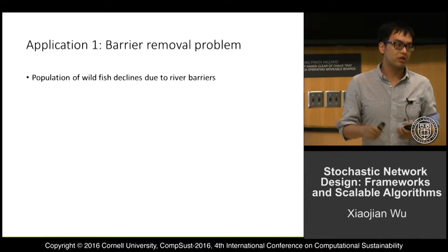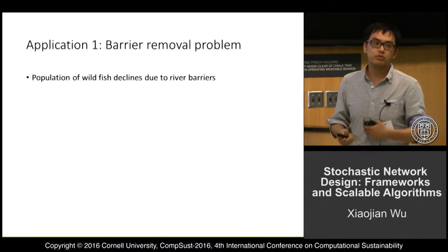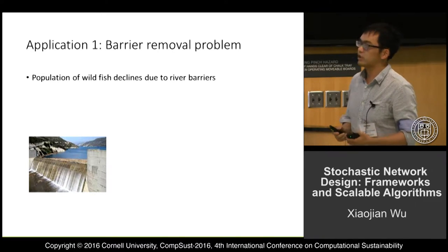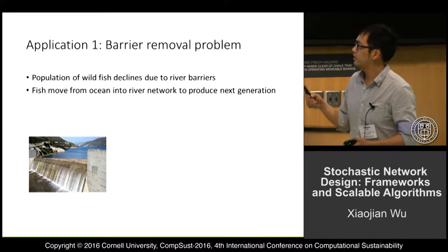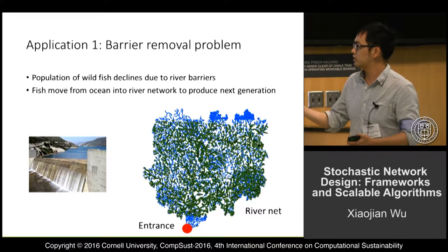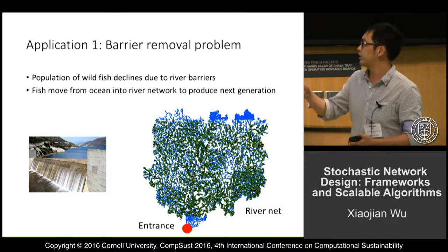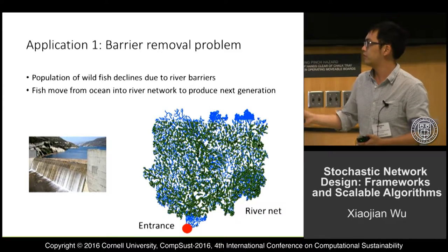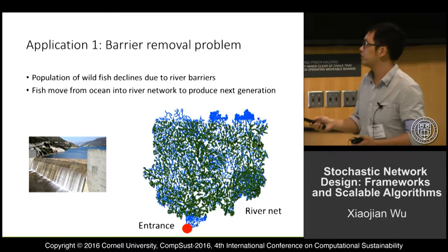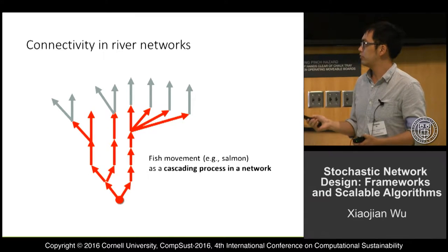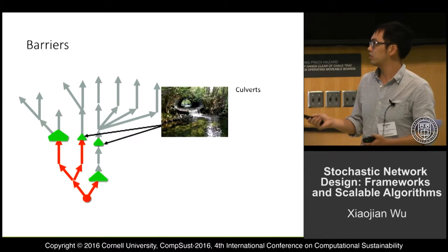Since the previous speaker already talked about this problem, I'll give a very abstract discussion. The population of fish has declined dramatically due to river barriers, because the barriers block them from reaching their historical habitats. Every year, fish start to enter the river from the entrance and move upstream to reach their habitats. This river network is a kinetic river network in Massachusetts, and the green dots represent the barriers — there is a huge number of them. This is a simple illustration of how the fish move gradually into the rivers, and some barriers block their movement.